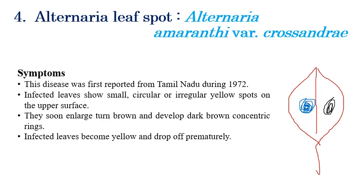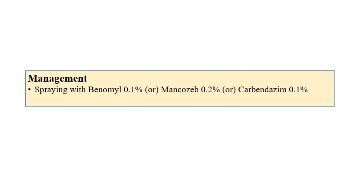This disease was first reported in Tamil Nadu in 1972. In later stages, after developing concentric rings, yellowing and dropping of premature leaves can also be observed. For management, spraying of benomyl at 0.1%, mancozeb, or carbendazim at 0.1% can manage this disease very efficiently.